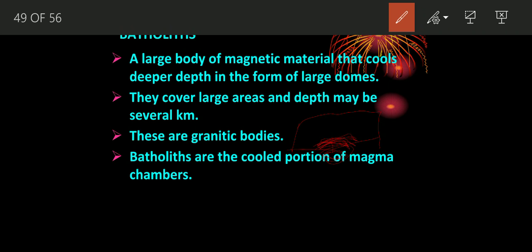Batholith forms when magma is deposited in the form of a large dome at deeper depths of the crust. After erosional processes like wind, glacier, or geographic events cause erosion or weathering of the above rocks, we are able to see the batholith. Batholiths are cooled portions of magma chambers. All the areas of granitic bodies exist here and cover very large areas and depths.